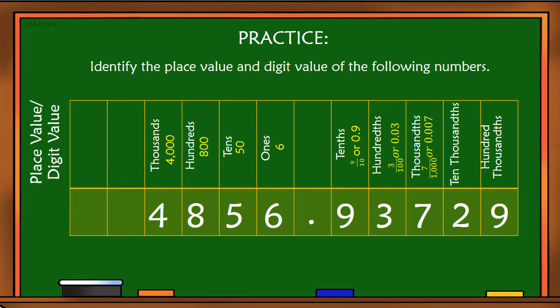Seven is equal to 7 over 1,000, or 0.007. Two is equal to 2 over 10,000, or 0.0002. And nine is equal to 9 over 100,000, or 0.00009.